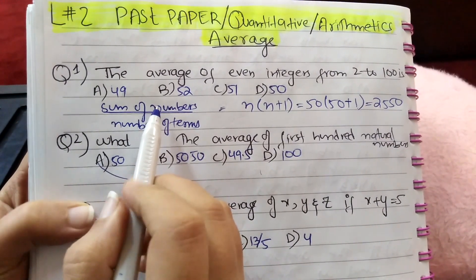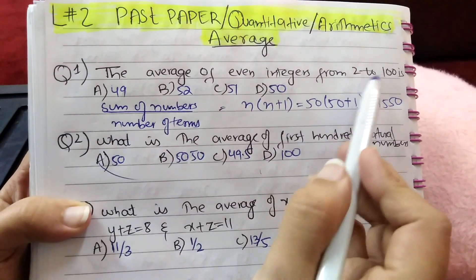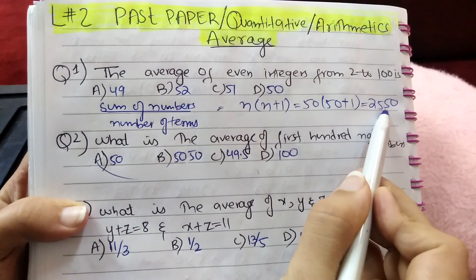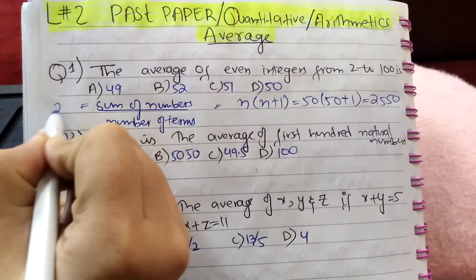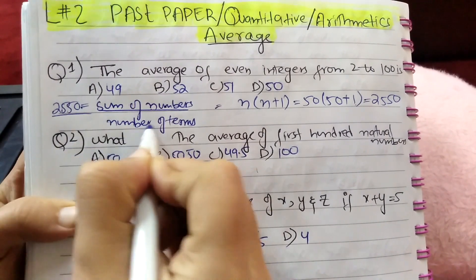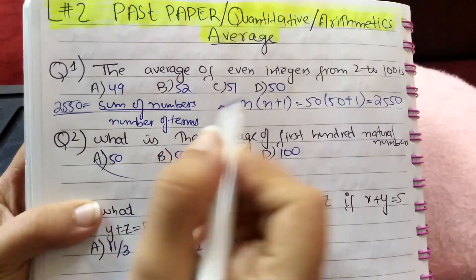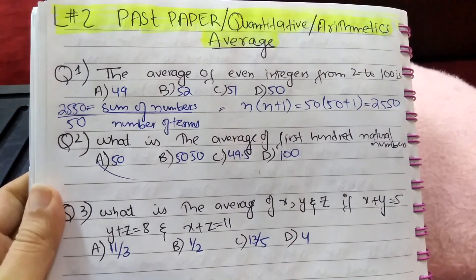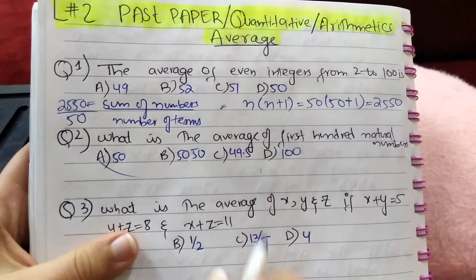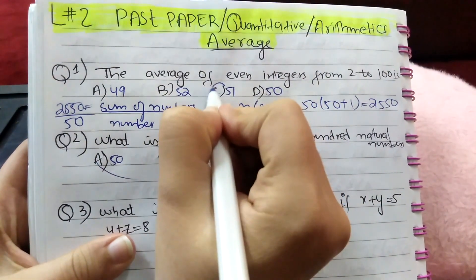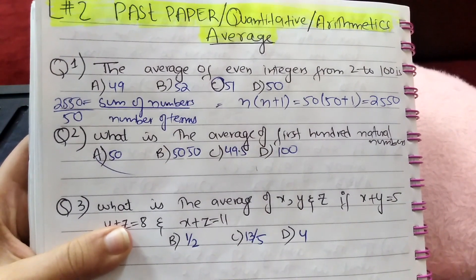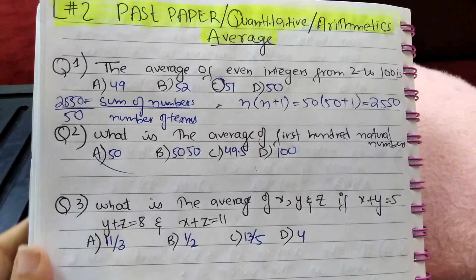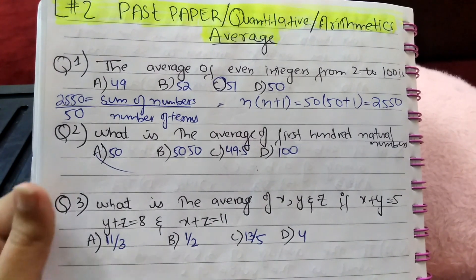So the sum of all even numbers ranging from 2 to 100 is equal to 2550, and the number of terms is 50. So when 2550 is divided by 50, the result is 51. So the correct option is option C. Next question: what is the average of the first 100 natural numbers?